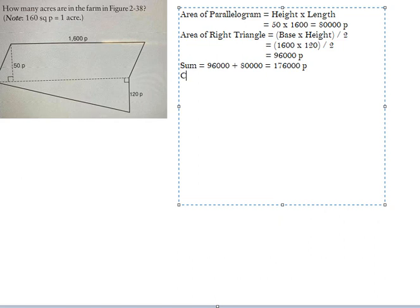The next one we use conversion unit. So we convert this number to acreage. We use 176,000 divided by 160 and we get about 1,100 acres. And this is the final number.